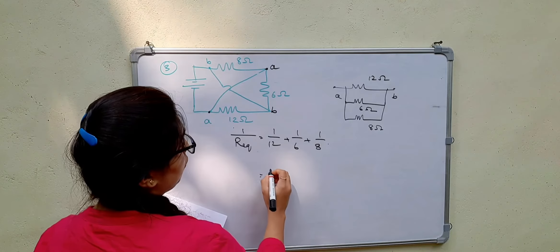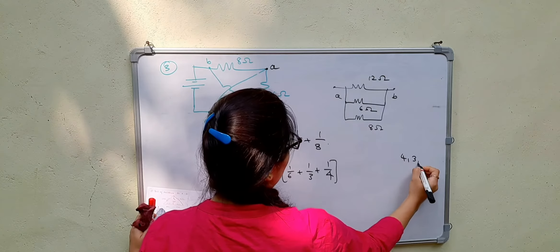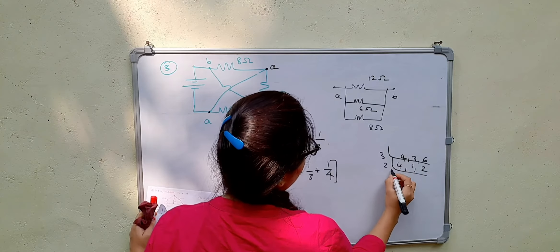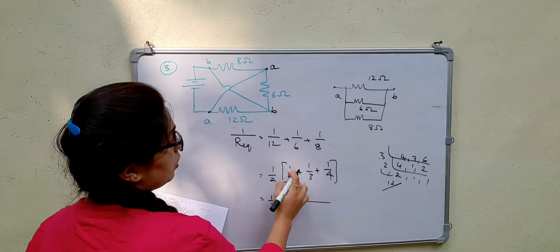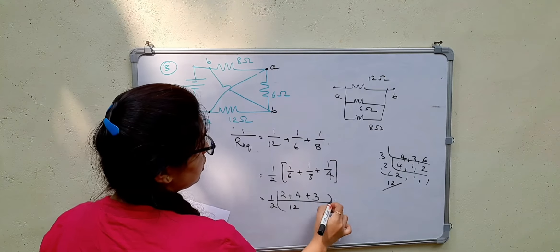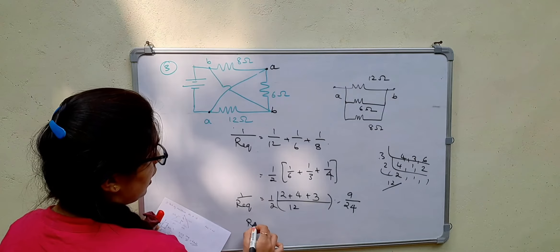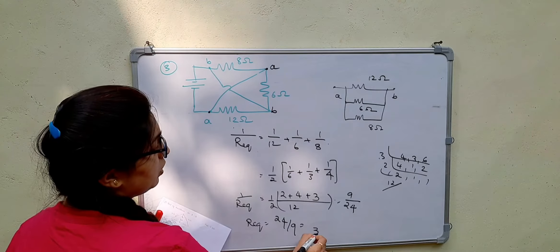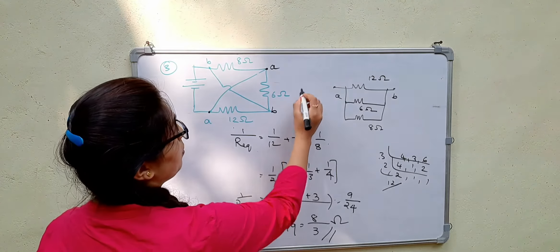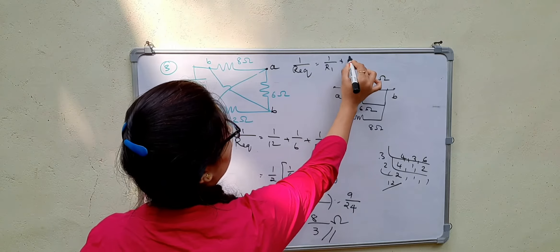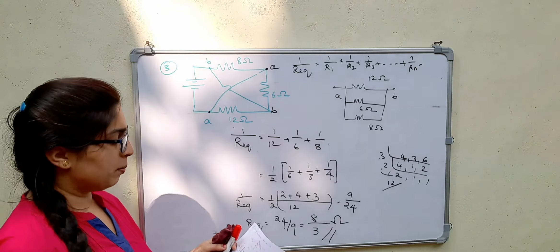For the parallel combination: 1/R_eq = 1/12 + 1/6 + 1/8. Taking LCM of 12, 6, and 8, which is 24: 1/R_eq = 2/24 + 4/24 + 3/24 = 9/24. Therefore R_eq = 24/9 = 8/3 ohms.